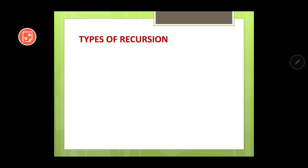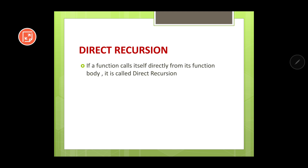There are basically two types of recursion: direct recursion and indirect recursion. Direct recursion is when a function calls itself directly from its own function body. For example, if I have defined a function named 'a' and within that function I am calling the same function 'a', it falls under the category of direct recursion.